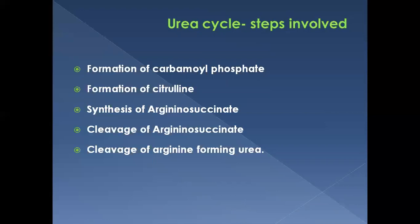There are five steps in the urea cycle: first, formation of carbamyl phosphate; second, formation of citrulline; third, synthesis of arginosuccinate; fourth, cleavage of arginosuccinate; fifth, cleavage of arginine forming urea. This urea cycle was discovered by Krebs and Hensley in the year 1932 and has five enzymatic steps.